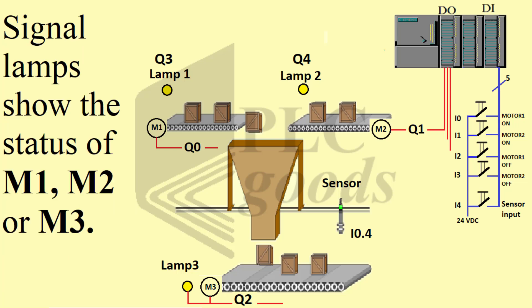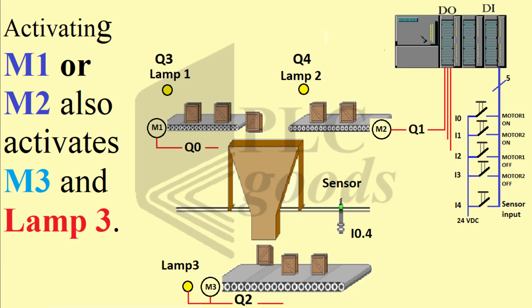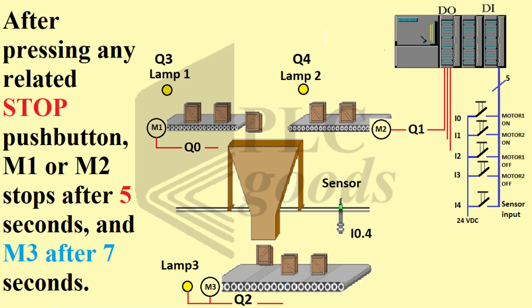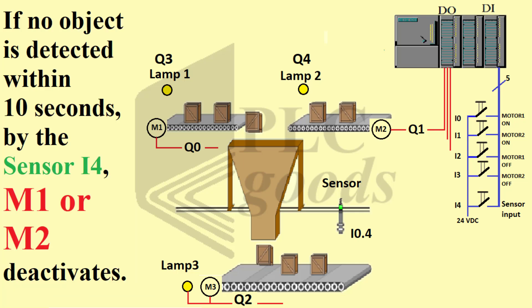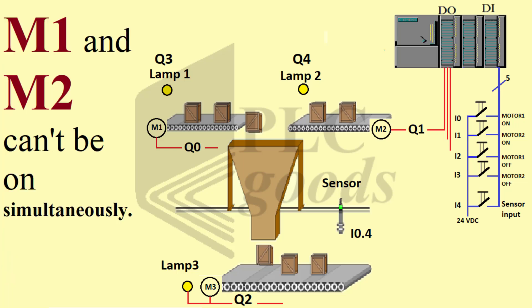Signal lamps show the status of M1, M2, or M3. Activating M1 or M2 also activates M3 and lamp 3. After pressing any related stop push button, M1 or M2 stops after five seconds and M3 after seven seconds. If no object is detected within 10 seconds by sensor I4, M1 or M2 deactivates. M1 and M2 cannot be on simultaneously.